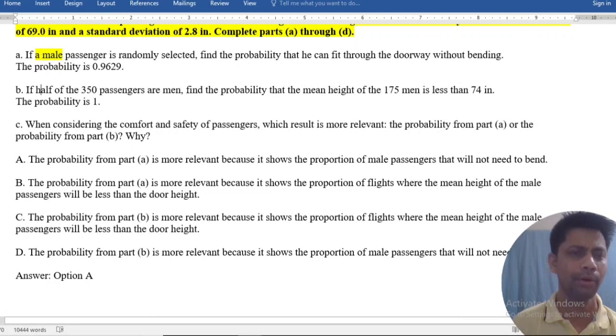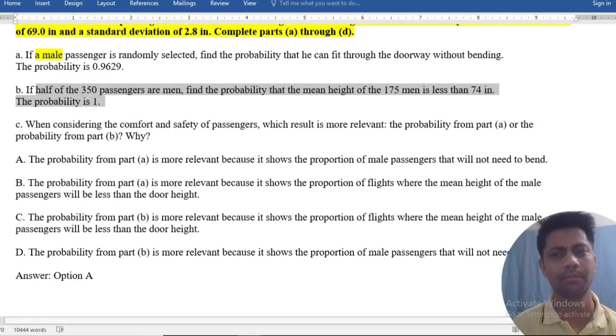Part B: If half of the 350 passengers are men, find the probability that the mean height of the 175 men is less than 74 inches, with probability 1.